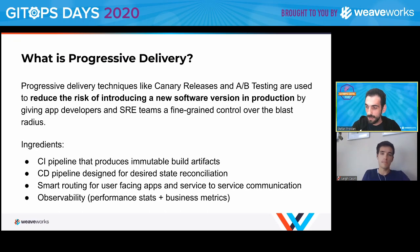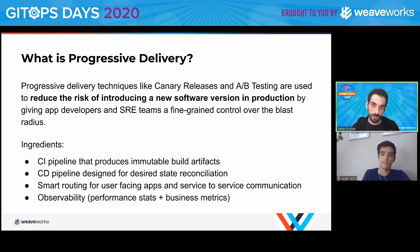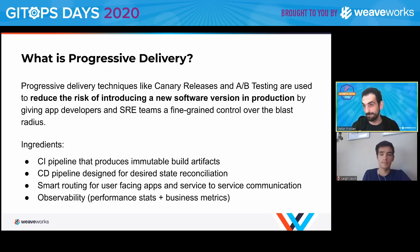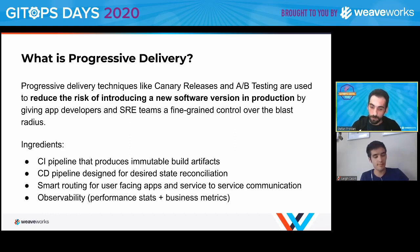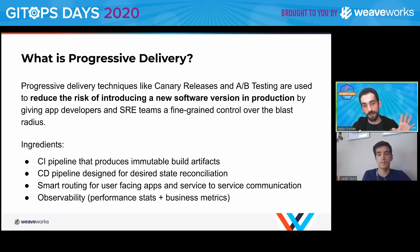There is also another way through A-B testing, where you segment your users and say, 'I want to do these tests on this segment of my users.' To achieve progressive delivery in your organization, you need some ingredients — the same things that apply to GitOps. The CI pipeline should produce immutable artifacts so you can know what's version A and what's version B. Your CD pipeline should reconcile the desired state.